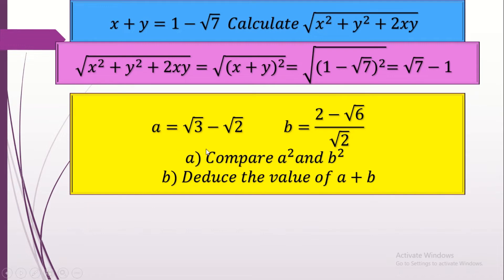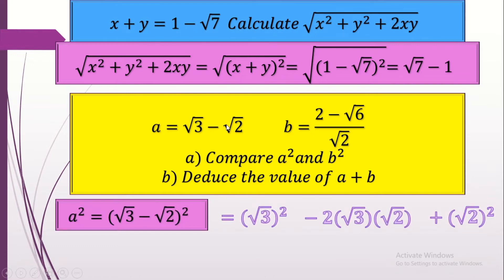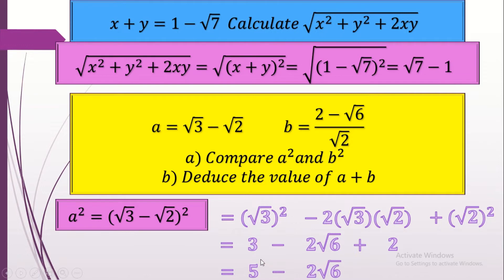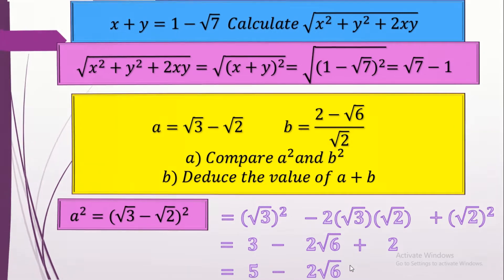For the second problem, a equals radical 3 minus radical 2, and b equals (2 minus radical 6) over radical 2. We need to compare a squared and b squared. For a squared: it's (radical 3 minus radical 2) all squared, which is in the form (a minus b) squared = a squared minus 2ab plus b squared. Substituting: radical 3 squared is 3, minus 2 times radical 3 times radical 2 — we multiply numbers under the radical — so it's 2 radical 6, plus radical 2 squared which is 2. That gives us 5 minus 2 radical 6.